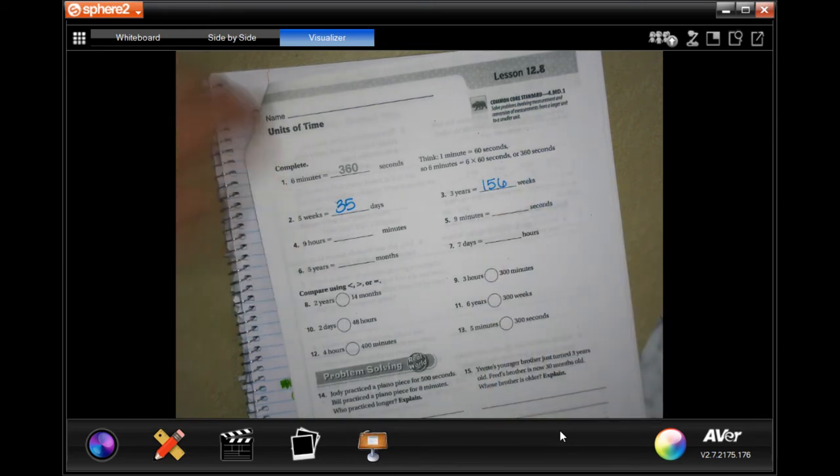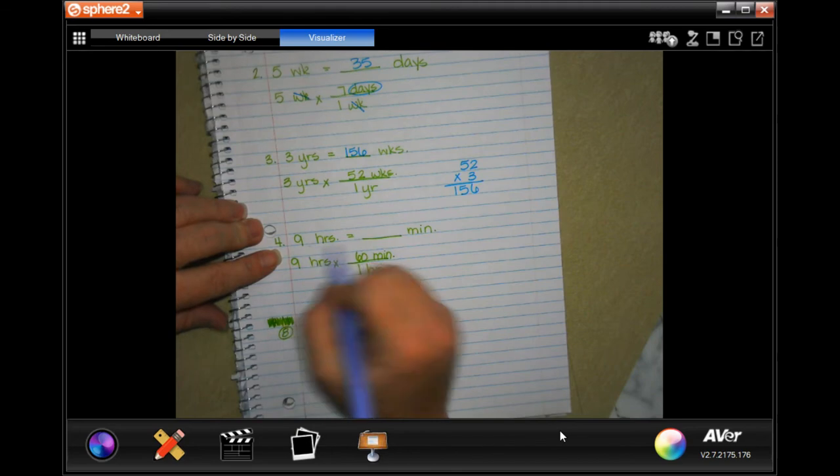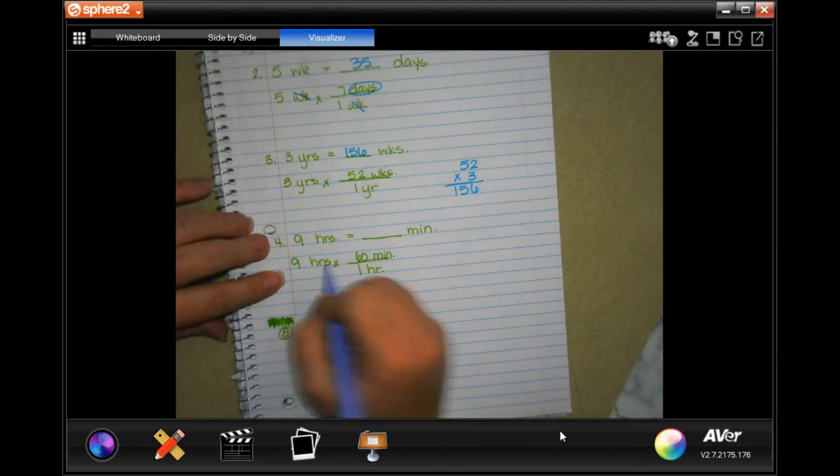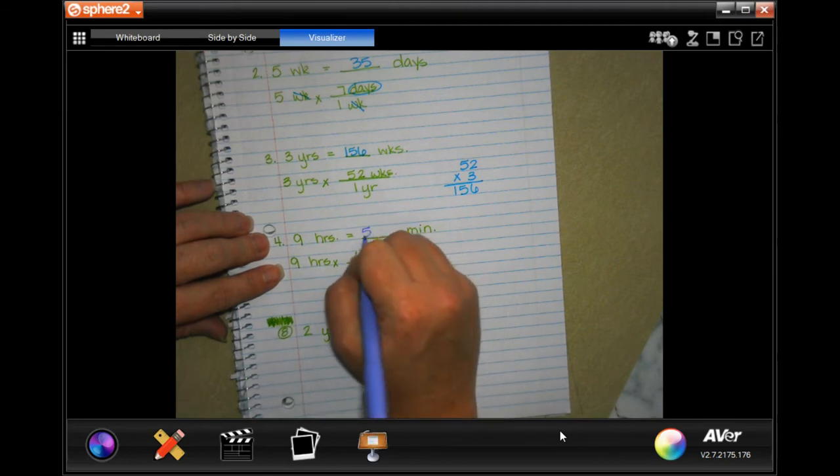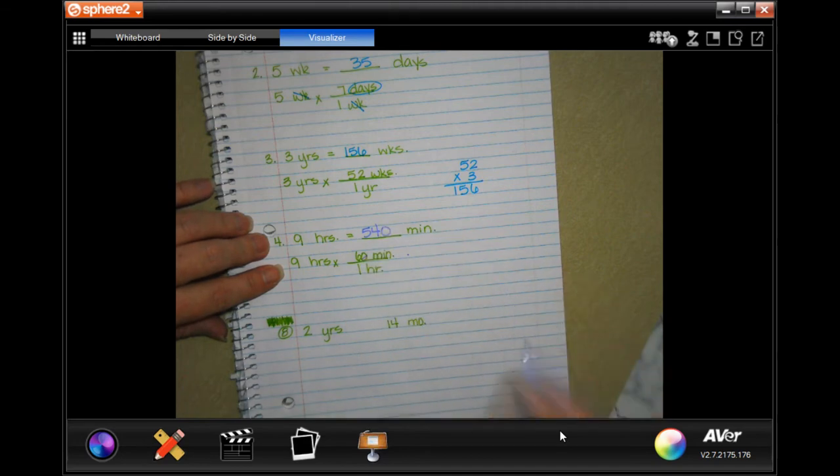One more. Nine hours is how many minutes? Well, nine hours, when in one hour there's 60 minutes, so nine times six is 54, and then I have a zero to add on, so 540 minutes.